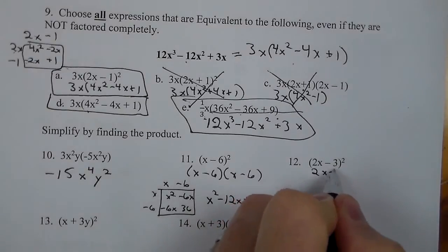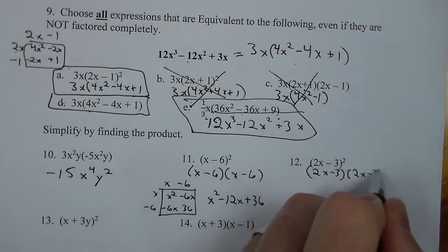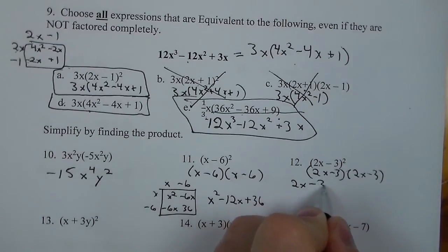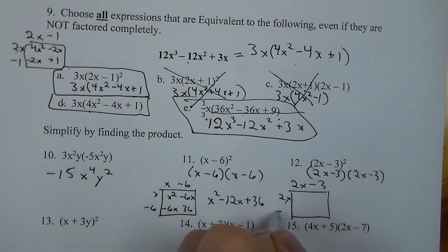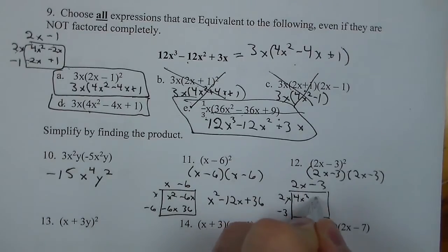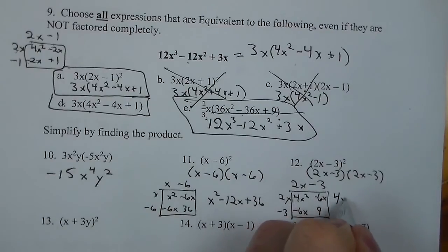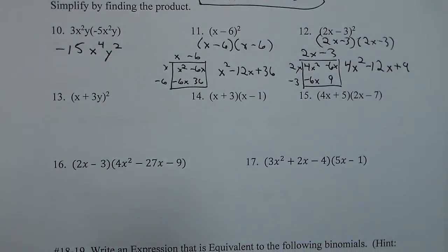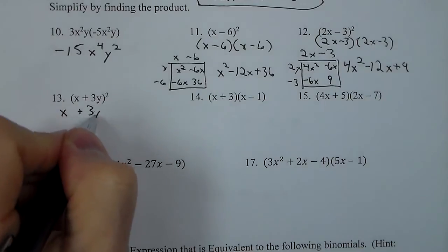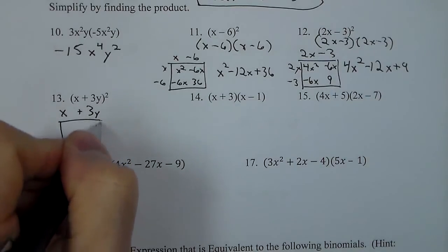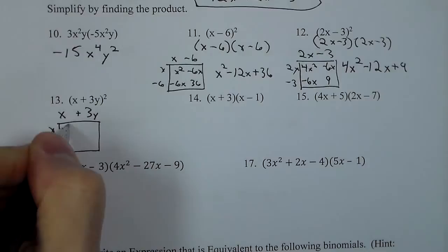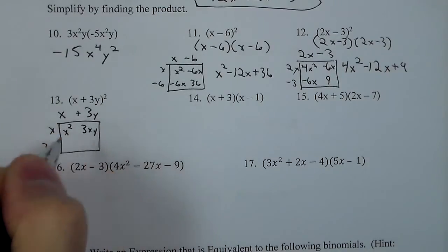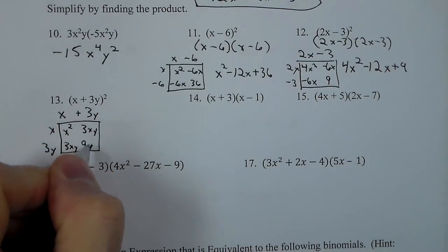Number 12 is the same idea — we multiply the two out, writing them separately as 2x minus 3 times 2x minus 3. We get 4x squared minus 6x minus 6x and positive 9, so that's 4x squared minus 12x plus 9. Number 13: we do x plus 3y times x plus 3y in the box and get x squared, 3xy, 3xy, and 9y squared.